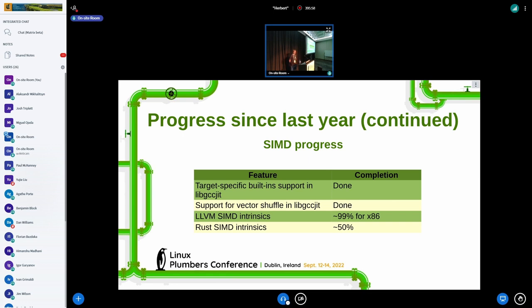As for the SIMD progress, we implemented the target-specific built-in support in libgcc JIT. And there's probably going to be some work needed there because it's not as great as I would like. But, yeah, at least it's working. We also implemented the vector shuffle instruction in libgcc JIT. And for the LLVM SIMD intrinsics, we got around 90% of them implemented for X86. I wrote around 90% because there's a few bugs in there that need to be fixed. And we got around 50% of the Rust SIMD intrinsics that are implemented.